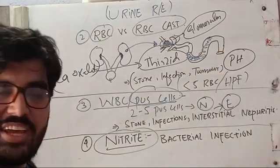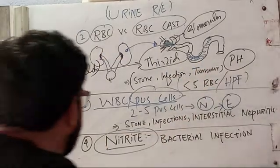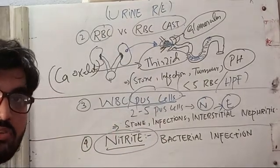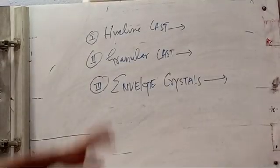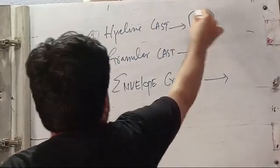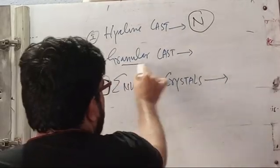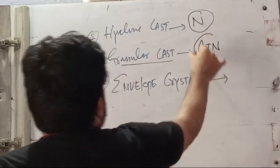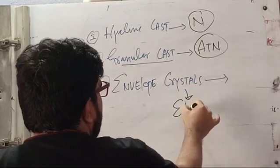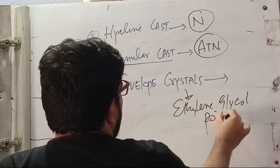Consider whether the urine is acidic or alkaline pH: alkaline pH dissolves calcium oxalate stones. There are three other important cast types: hyaline casts, seen in dehydration or as a normal phenomenon since they are composed of Tamm-Horsfall protein; granular casts, seen in acute tubular necrosis; and envelope-shaped crystals, which are seen in ethylene glycol poisoning.